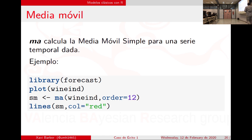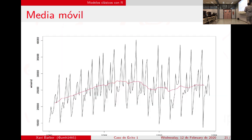¿Cómo calculamos la media móvil en R? Si utilizamos la librería Forecast —que al cargarla ya carga muchas otras cosas— utilizo el comando MA, tan difícil como eso. Por ejemplo, con una serie de producción de vino, la media móvil haría algo muy parecido también a lo que hace el suavizado LOESS.